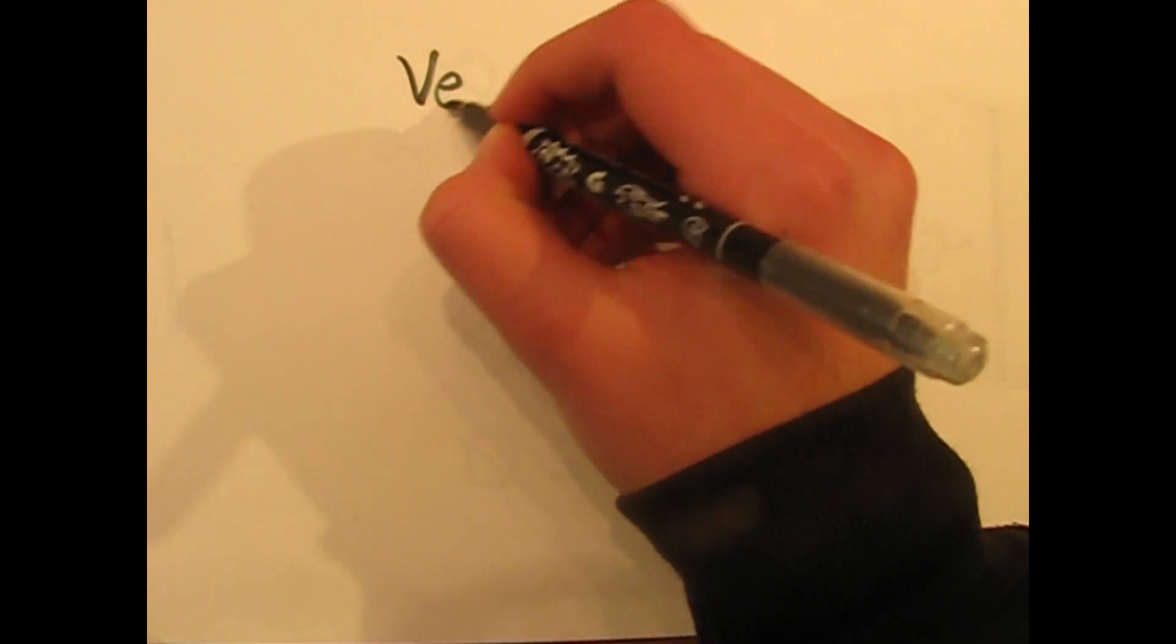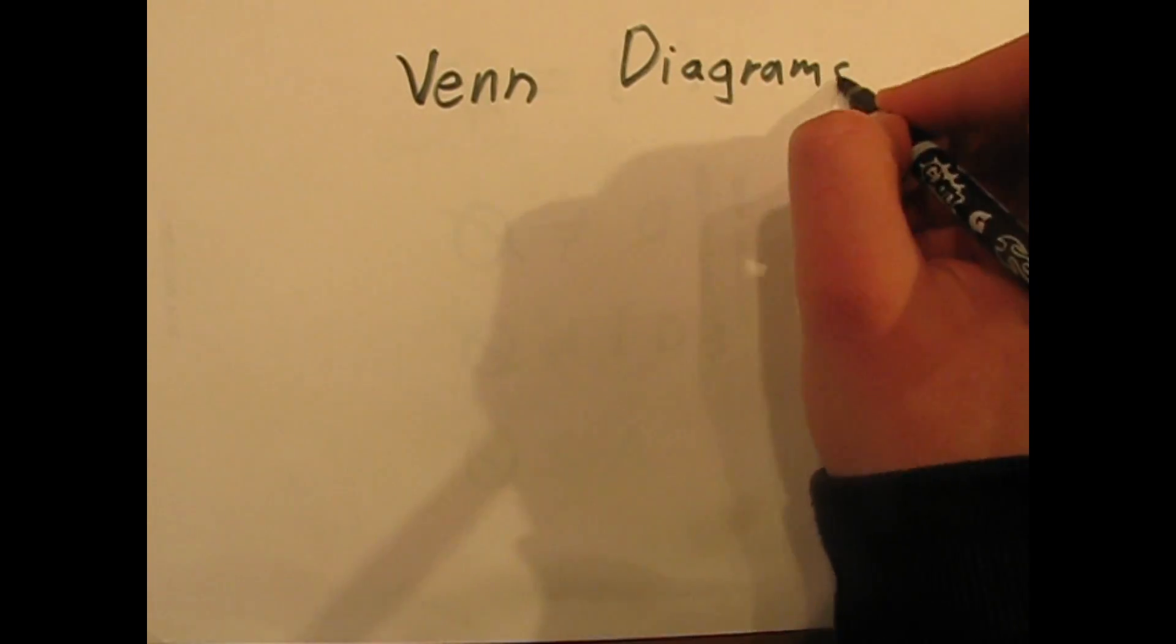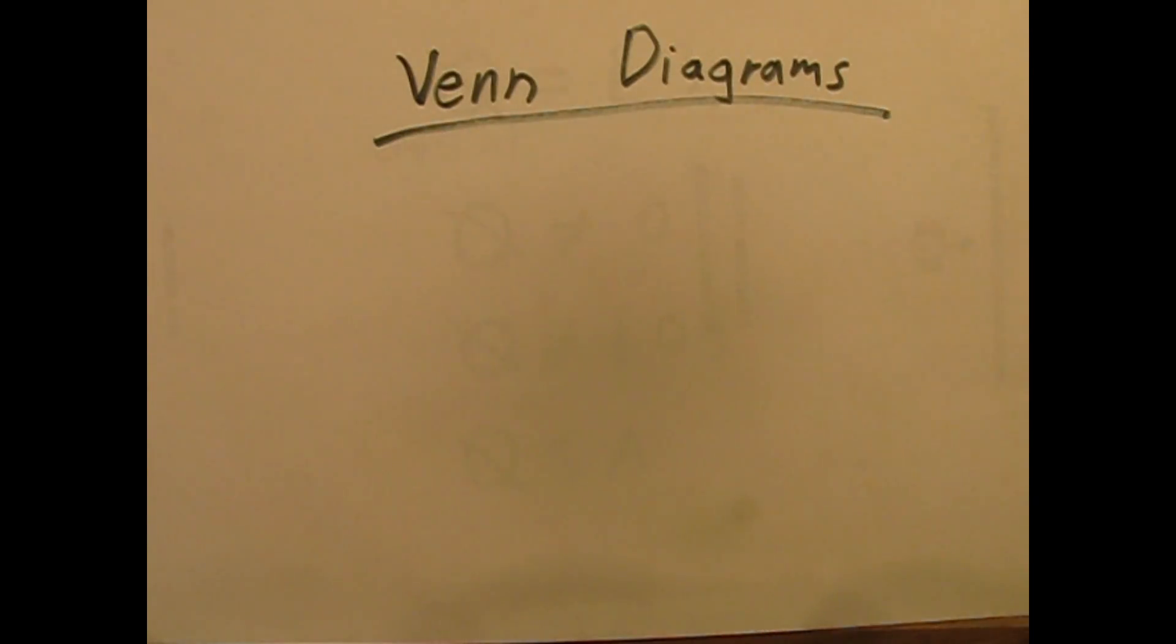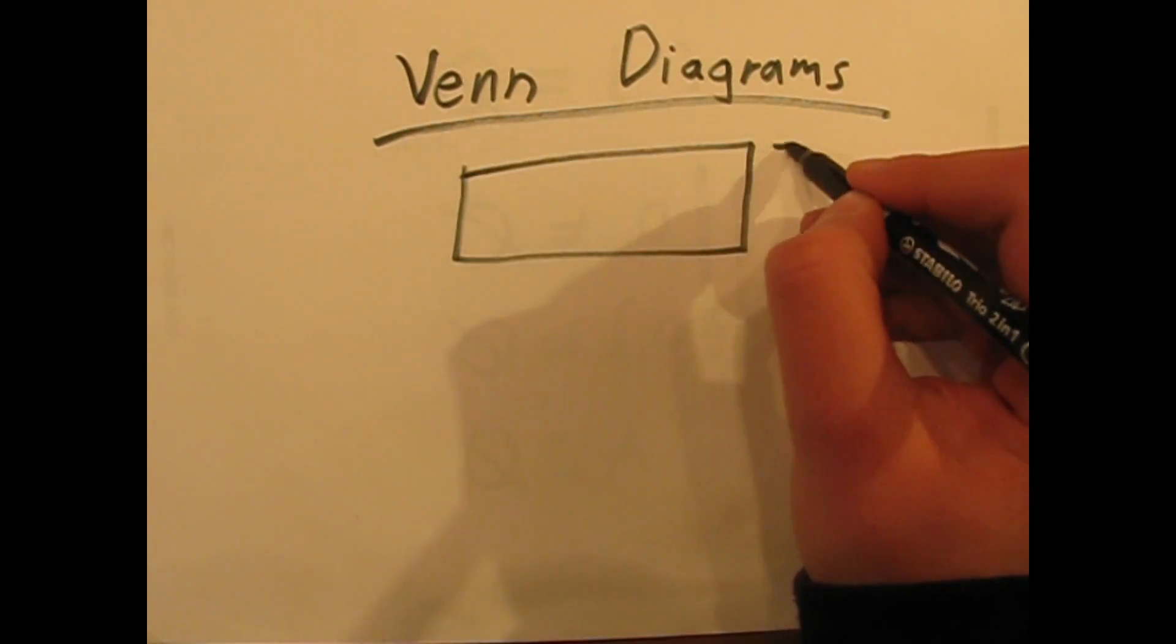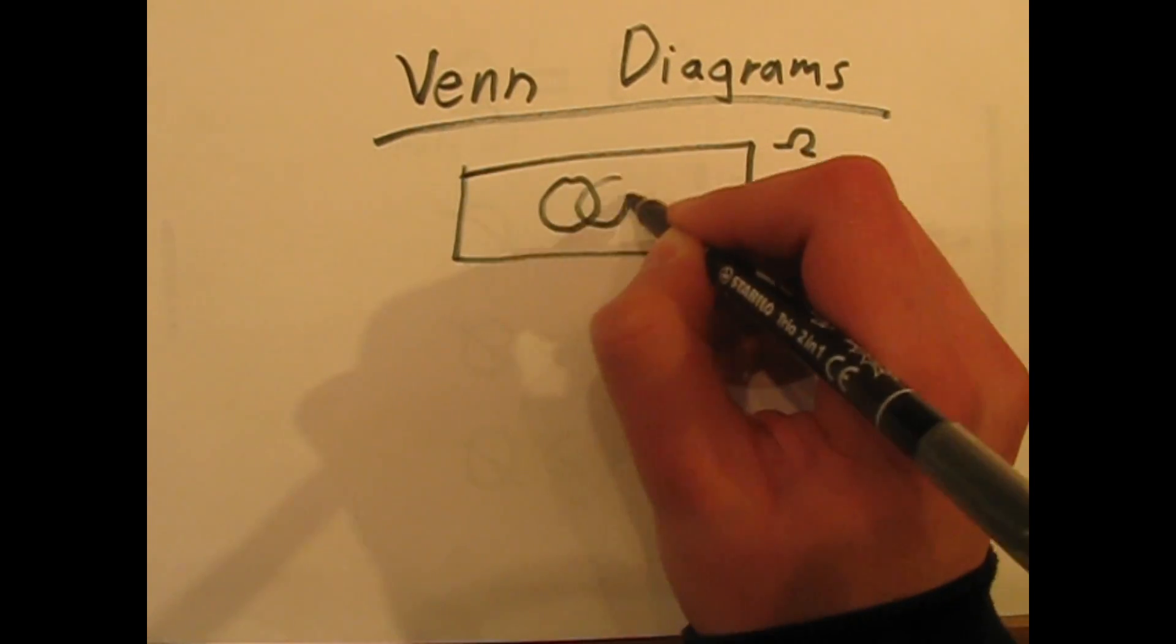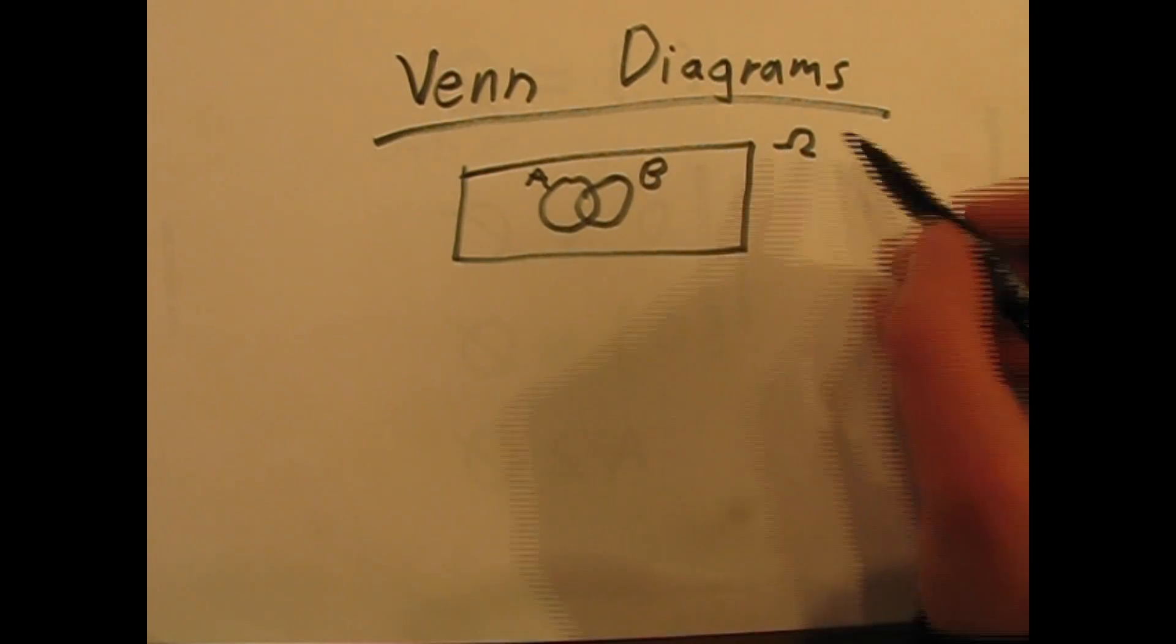What most people are familiar with, though, that is relative to set theory, are Venn diagrams. When using Venn diagrams, we usually have a hyperset, symbolized with a capital letter like Omega, that contains all of our components. That can lead to another story, which we will talk about in another video.